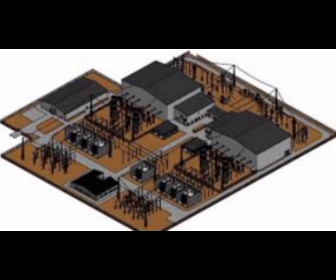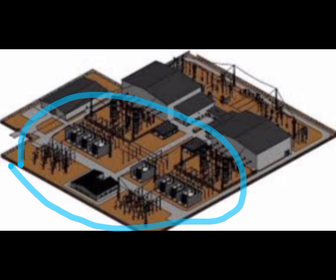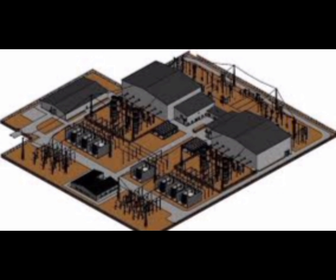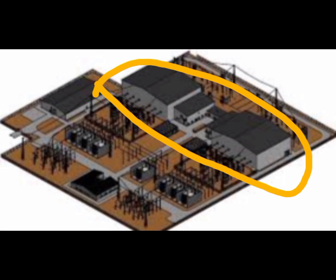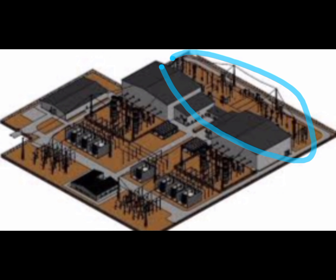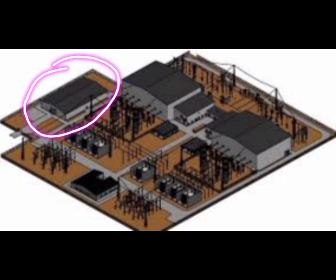In summary, the classic HVDC converter station design features a larger AC yard with extensive filtering and switching equipment, a central valve hall area with power electronic devices, and a smaller DC yard with switching and filtering equipment. The DC hall buildings provide a controlled environment for the DC equipment, while the spare parts area supports maintenance and repair activities.